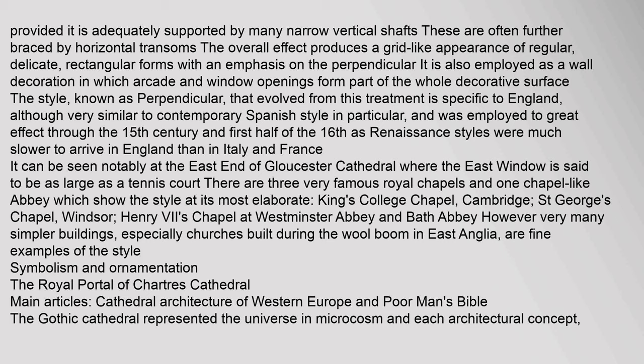The perpendicular style was employed to great effect through the 15th century and first half of the 16th, as Renaissance styles were much slower to arrive in England than in Italy and France. It can be seen notably at the east end of Gloucester Cathedral, where the east window is said to be as large as a tennis court. Three very famous royal chapels show the style at its most elaborate: King's College Chapel Cambridge, St George's Chapel Windsor, and Henry VII's Chapel at Westminster Abbey, as well as Bath Abbey. Very many simpler buildings, especially churches built during the wool boom in East Anglia, are also fine examples of the style.